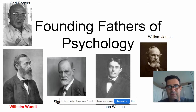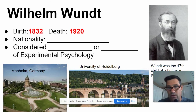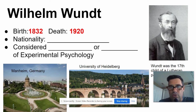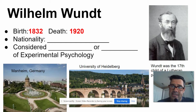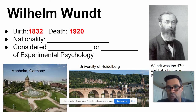Wilhelm Wundt — let's talk about this. You won't be tested on this, but just to give you context of the time period: his birth was in 1832, he dies in 1920. So his main active period is going to be the late 19th century. By the way, he was the 17th child of Lutheran parents.